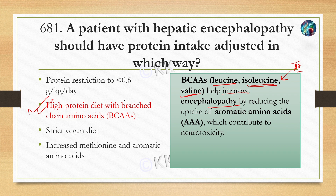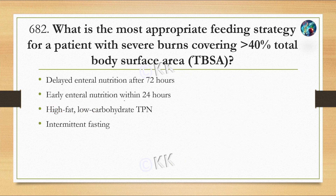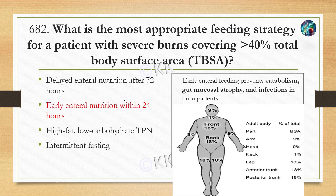Next question: what is the most appropriate feeding strategy for a patient with severe burns covering more than 40 percent of total body surface area? Option A: delayed enteral nutrition after 72 hours. Option B: early enteral nutrition within 24 hours. Option C: high fat low carbohydrate TPN (total parenteral nutrition). Option D: intermittent fasting. The correct option is B.